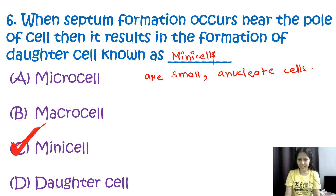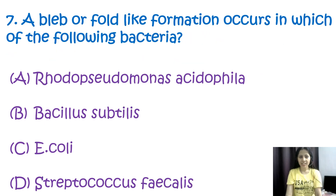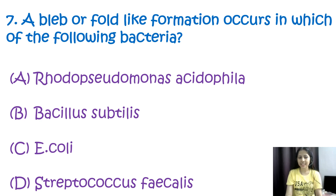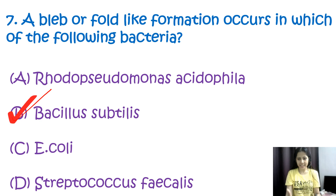Question number seven: a bleb or fold-like formation occurs in which of the following bacteria? Options are Rhodopseudomonas acidophila, Bacillus subtilis, E. coli, or Streptococcus faecalis. The correct option is B, Bacillus subtilis. Bacillus subtilis is a gram positive bacterium.